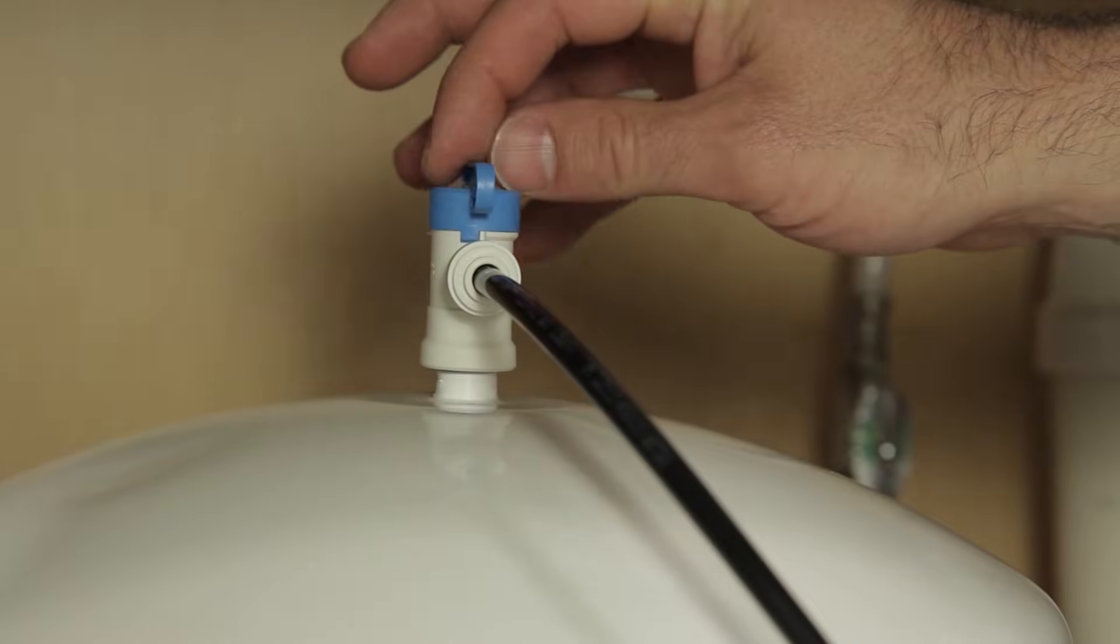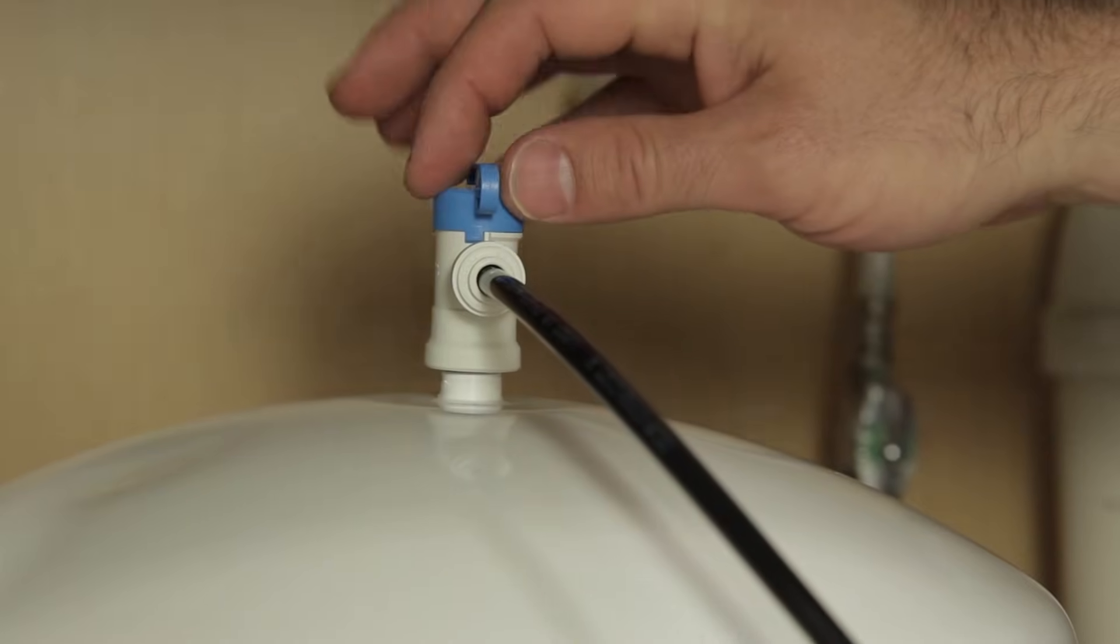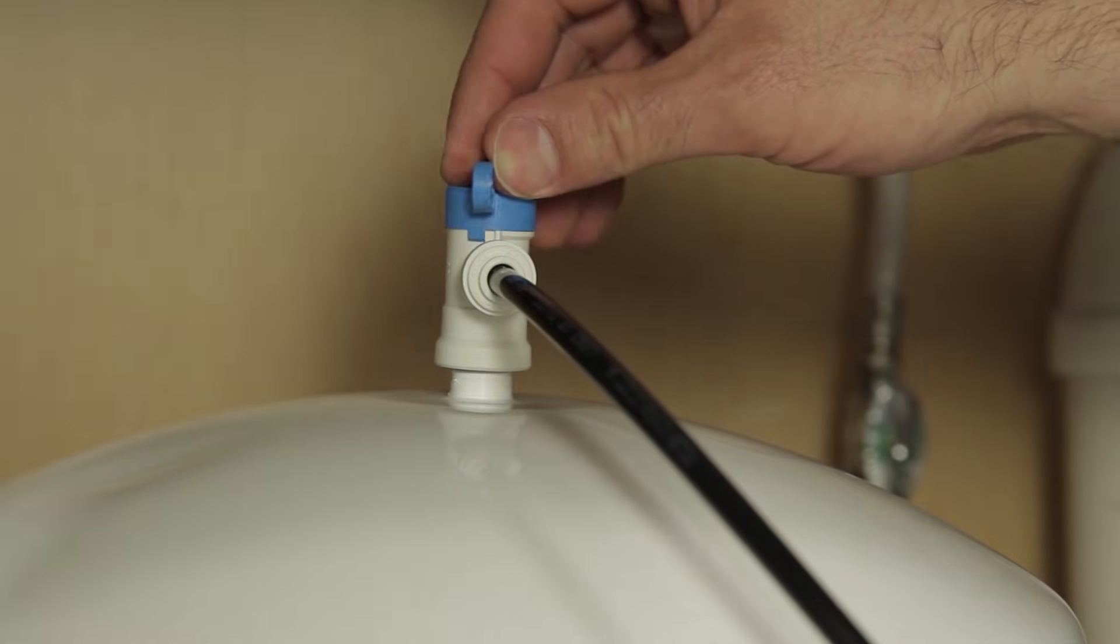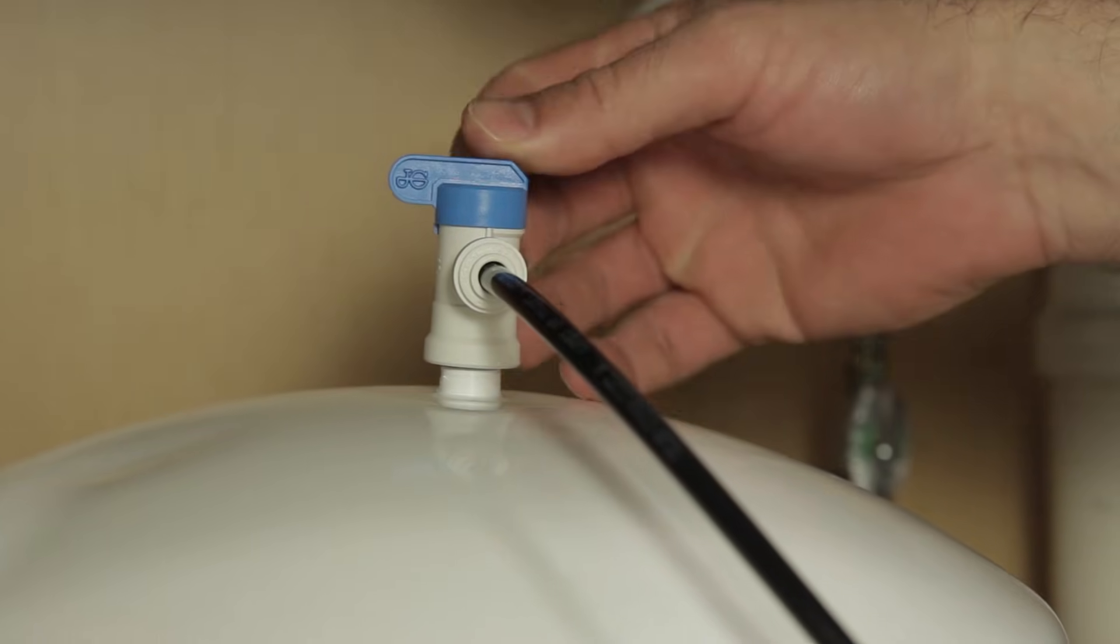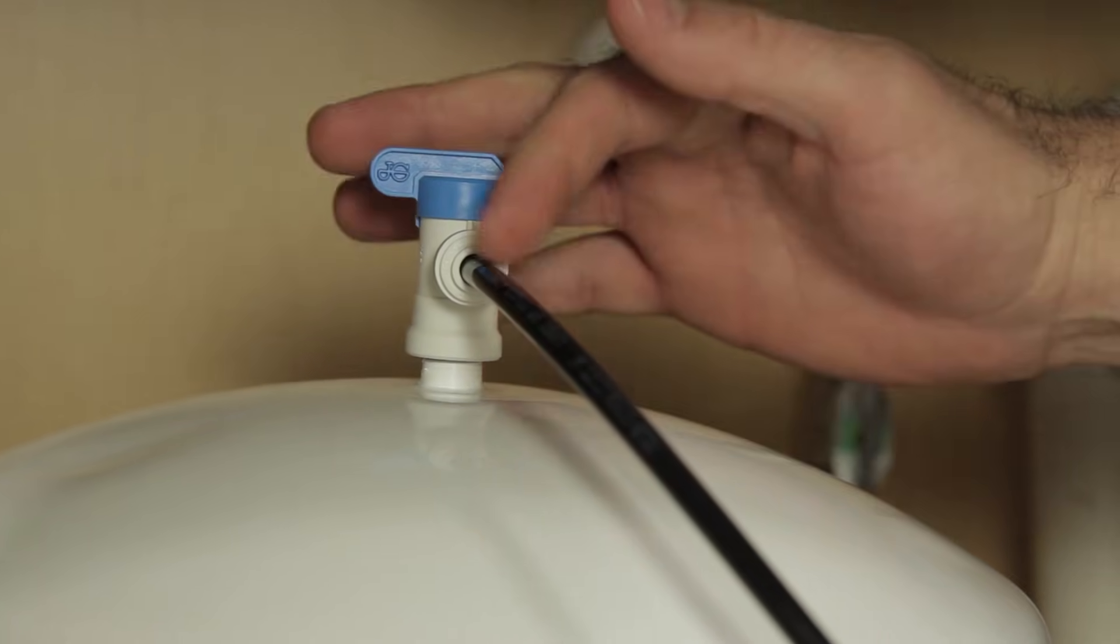When the handle is parallel with the line, this is the on position. This would be the off position perpendicular to the line.